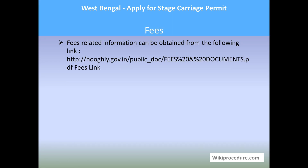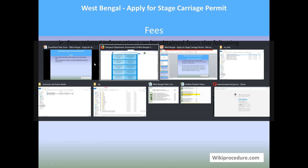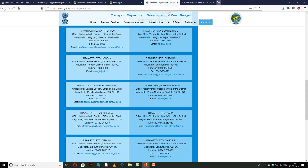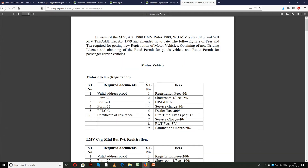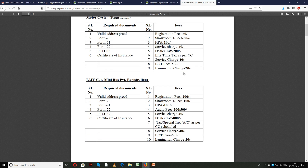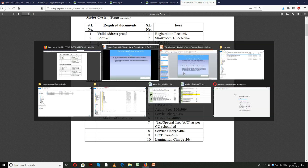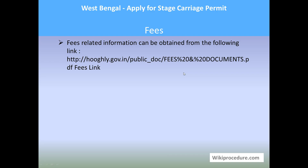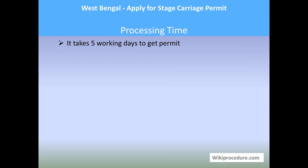Fees: the link provided here will help you reach the fees-related information listed along with the services on that page. You can select the service of your choice and understand the fees you need to carry to the RTO office for this procedure. Processing time: it takes five working days to get the permit.